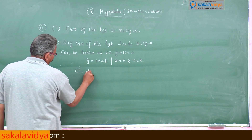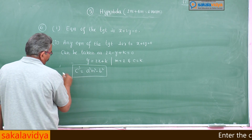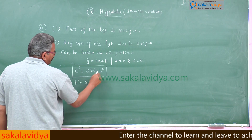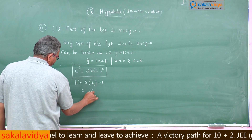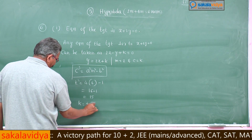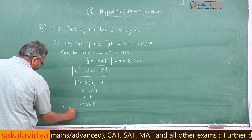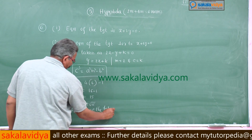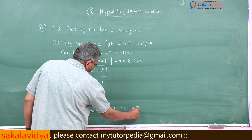Applying the condition for tangency: c² = a²m² - b². So k² = 4 × 4 - 1 = 16 - 1 = 15. Therefore k = ±√15. The equation of the tangent perpendicular to x + 2y = 0 is 2x - y ± √15 = 0. The problem is now complete.